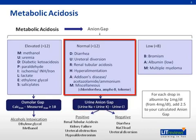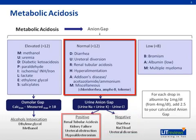In the presence of acidosis, if the kidneys are working properly, the urine anion gap is usually zero or negative. This is the case, for example, of diarrhea or other GI bicarbonate loss. If the kidneys are unable to excrete acid properly — which is the case of renal tubular acidosis or renal failure — then the urine anion gap will be positive.